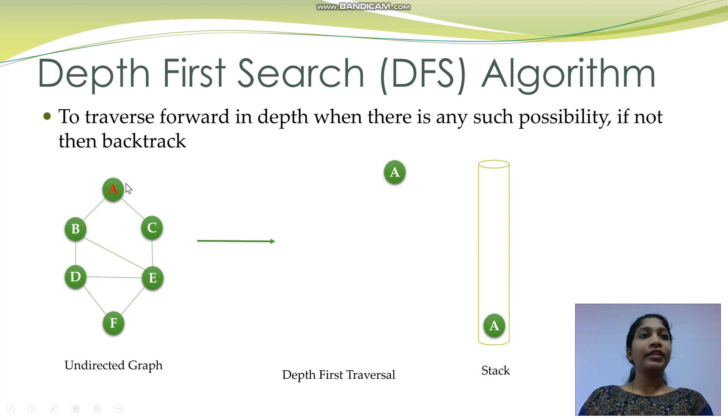From A, I can visit B or C. Let me choose B. Push B into the stack and mark B as visited. Similarly, from B, I go to D, from D to E and from E to F.